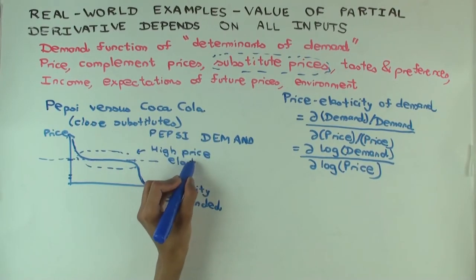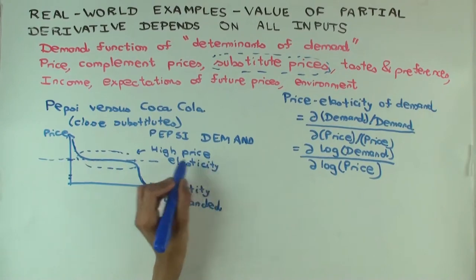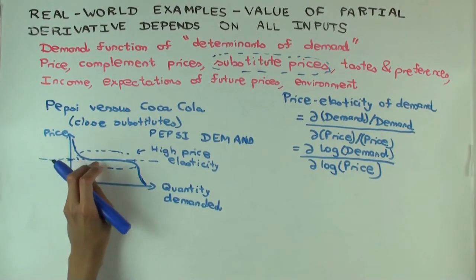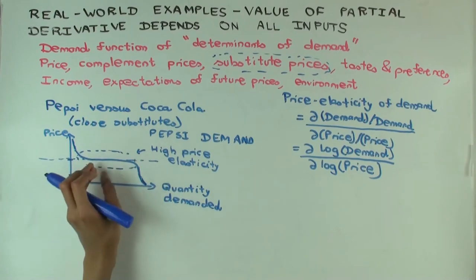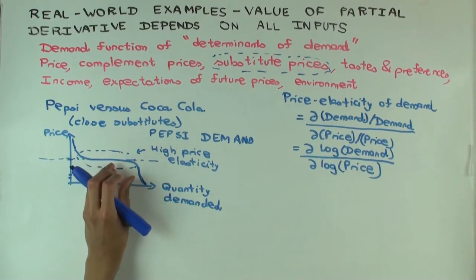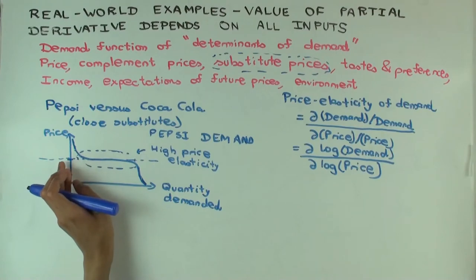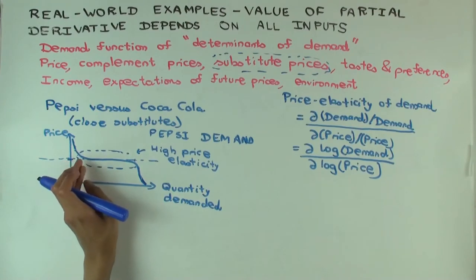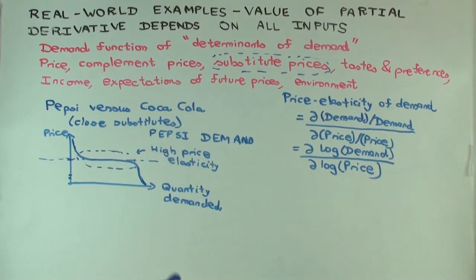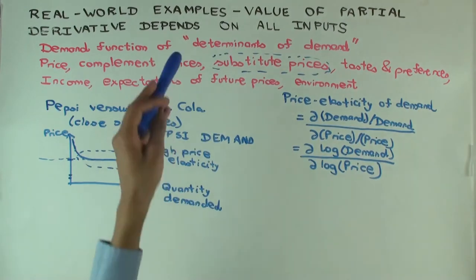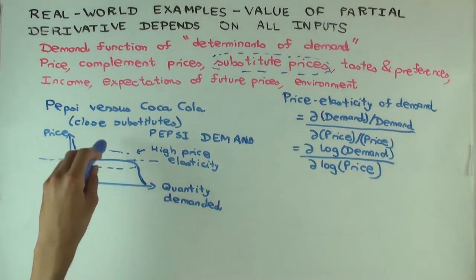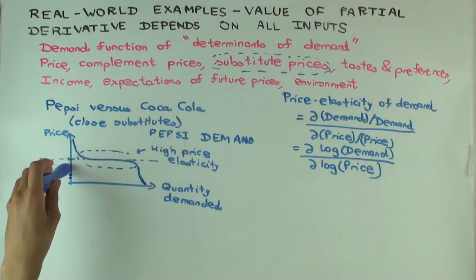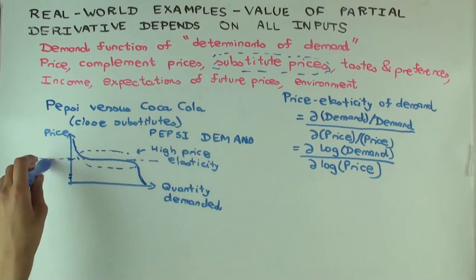So what is the overall conclusion? The price of Coca-Cola sets the point where the price elasticity of Pepsi is high. It also affects the magnitude of the price elasticity at other points, but in particular the price of Coca-Cola tells you where the price elasticity of Pepsi is high. This relates back to our general idea: the value of a partial derivative depends on all inputs, and correspondingly the value of the price elasticity with respect to Pepsi depends on the price of Coca-Cola.